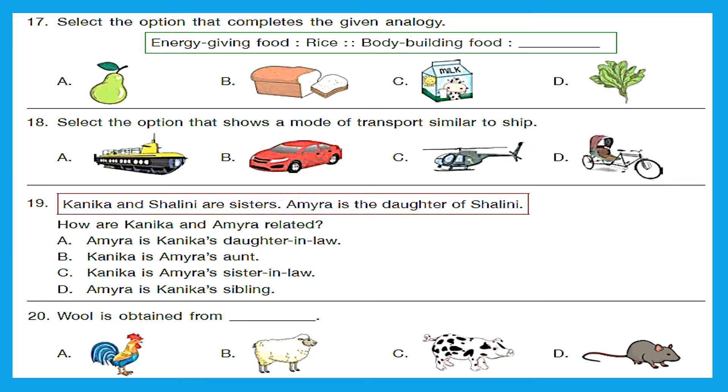Question 17. Select the option that completes the given analogy. Energy giving food rice, body building food dash. So here we are putting the category of the food and then we are giving the example. As energy giving food is rice, so out of these options which one is body building food, it is option C milk. Question 18. Select the option that shows a mode of transport similar to ship. Ship is a water transport. Out of ABCD option A, that is submarine is also a water transport. So for us option A is the right answer.